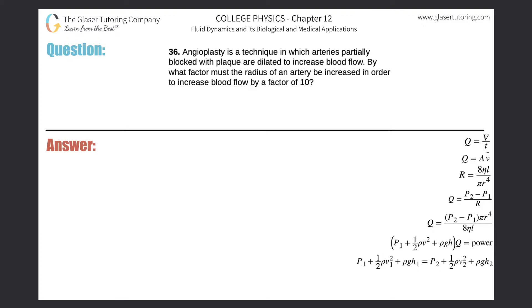Number 36. Angioplasty is a technique in which arteries partially blocked with plaque are dilated to increase blood flow. By what factor must the radius of an artery be increased in order to increase blood flow by a factor of 10?